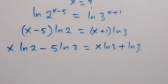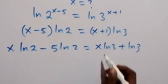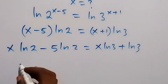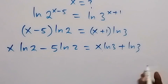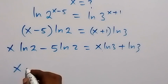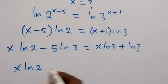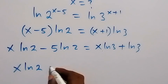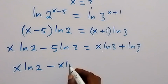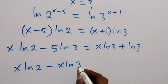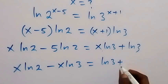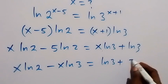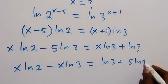Then from here, let's collect the terms with x to one side. We take x ln 3 to the left and take minus 5 ln 2 to the right. So we have x ln 2 minus x ln 3 equals to ln 3 plus 5 ln 2.